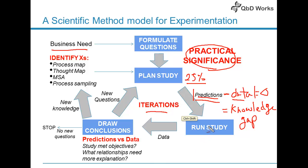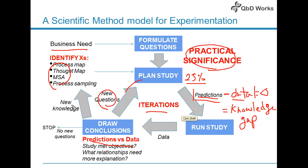Then we go into the run study, where you collect data. Finally, we draw conclusions — looking at prediction versus data, whether the study met objectives, what relations need more explanation, and new questions that come up. We then plan the next study. New knowledge will require us to go back into our process map, hypothesis map, and measurement system analysis.